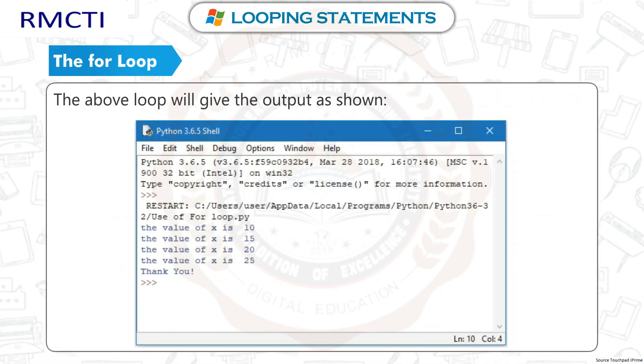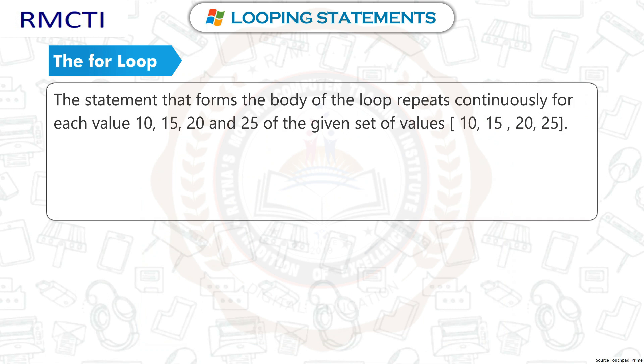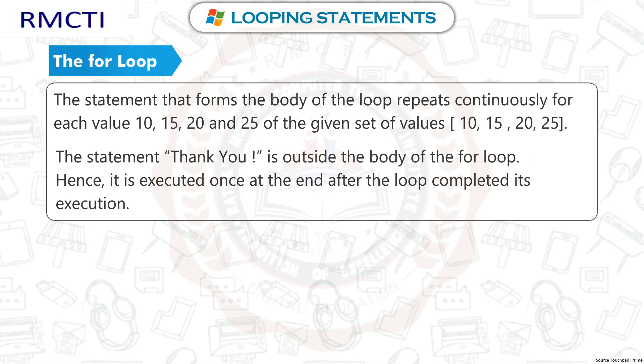The above loop gives the output as shown. The statement forming the body of the loop repeats continuously for each value — 10, 15, 20, and 25 — of the given set. The statement 'thank you' is outside the body of the for loop; hence, it is executed only once at the end after the loop completes its execution.